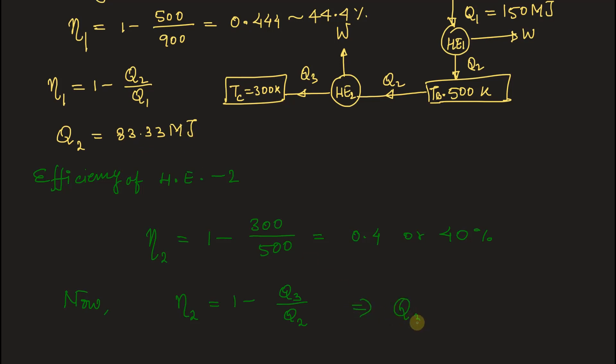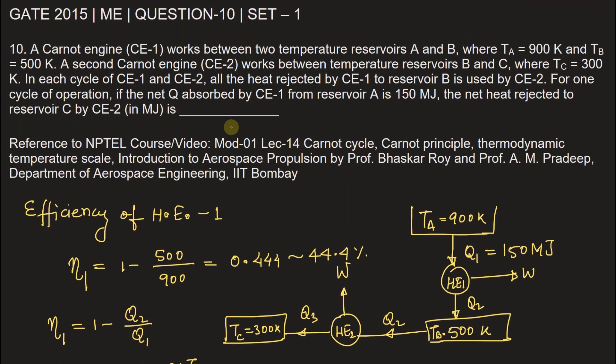Therefore Q3 will be equal to 50 megajoule. We just need to substitute eta 2 and Q2 here and we get Q3 is equal to 50 megajoule. So the correct answer will be 50 in megajoule. The net heat rejected to reservoir C by second heat engine in megajoule is 50.